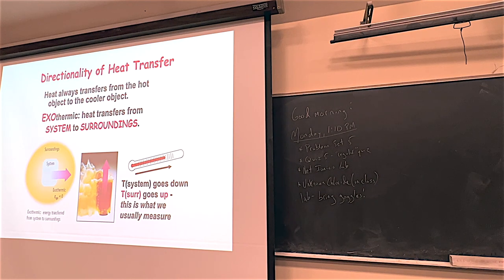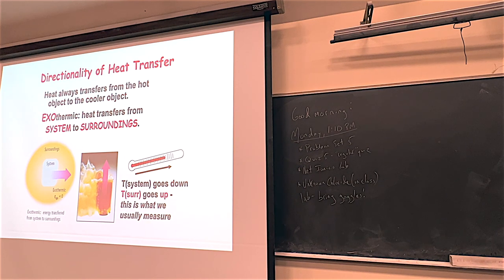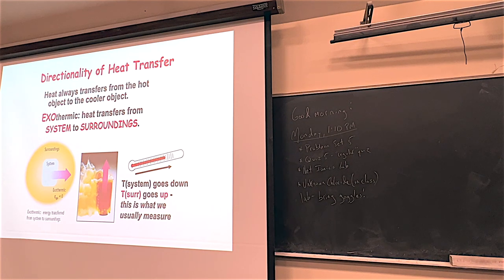Acids and bases - especially strong acids and bases - put together release lots of energy. The acid and base are the system; they create water and energy that goes to the surroundings. We feel it getting warm, temperature goes up. So exothermic: energy goes from system to surroundings, it's being released, and you will feel it getting warmer.